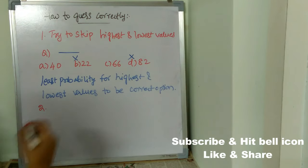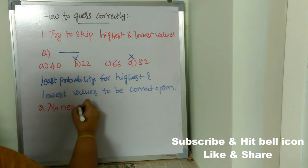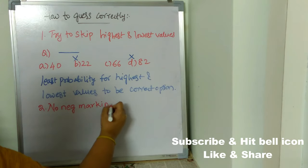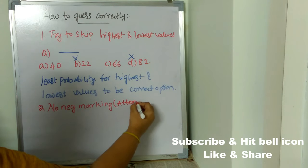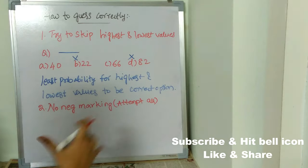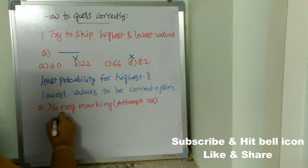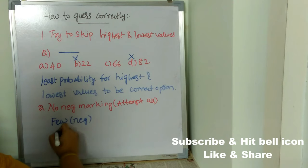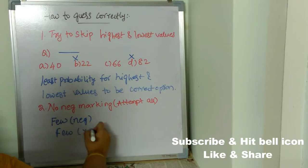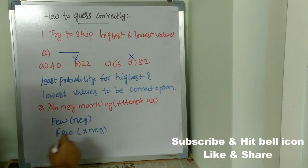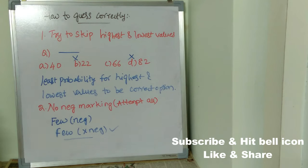The next important technique: if there is no negative marking, then attempt all questions. In JEE Advanced, some questions have negative marking and some don't. For questions without negative marking, you should not leave even one question unattempted. Whatever answer you think is right, just put it — don't leave any question blank.